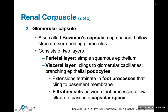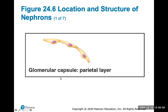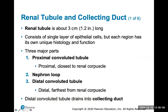The glomerular capsule, also called Bowman's capsule, is a cup-shaped hollow structure surrounding the glomerulus. It consists of a parietal and a visceral layer. The visceral layer clings to the glomerular capillaries and has branching epithelial podocytes with foot processes that cling to the basement membrane. There are filtration slits between the foot processes that allow filtrate to pass into the capsular space.